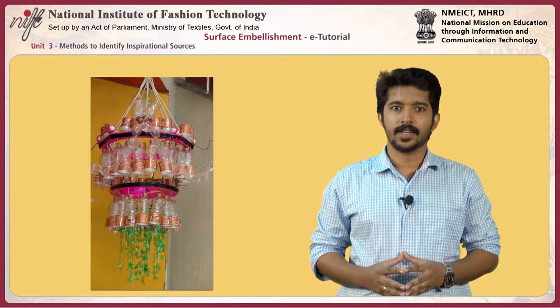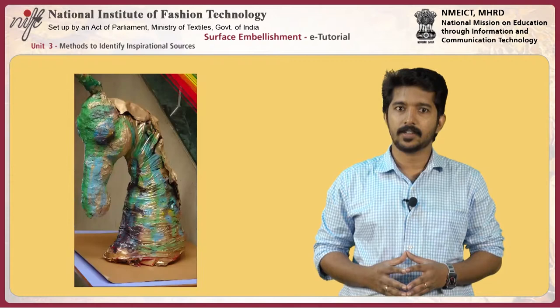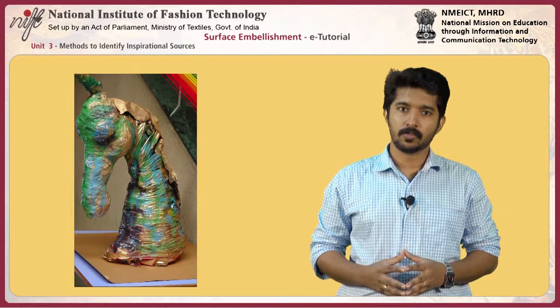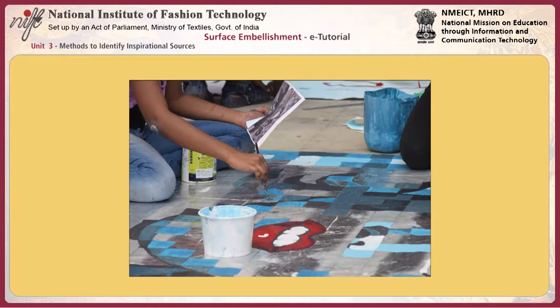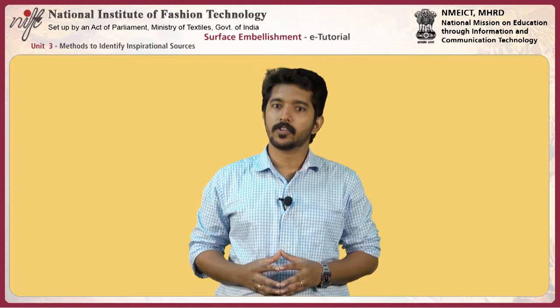At present, designers get little support or encouragement to do research. This unit gives straightforward guidelines for how surface embellishment and textile companies can support their designers in their use of sources of inspiration. This unit also provides an overview of the surface embellishment process and explains how sources of inspiration are employed. It also addresses the question of how design performance can be improved through better support of sources of inspiration for surface embellishment in textiles and garments.